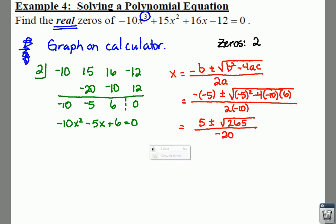All you have to do is just type it into your calculator. Make sure when you type it into your calculator that you're careful. There's no plus or minus button, so you're going to do it twice. We'll say 5 plus square root of 265 divided by -20.